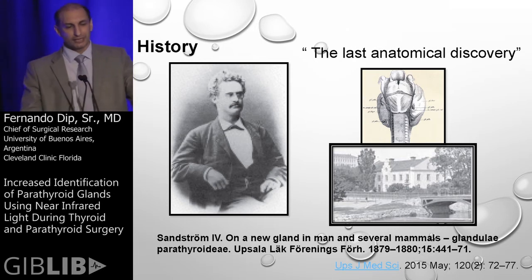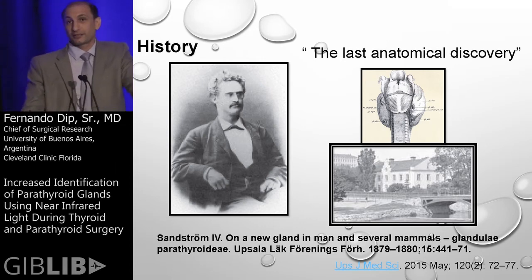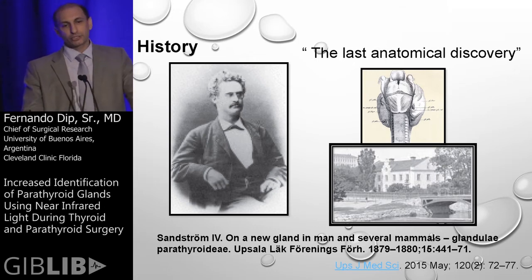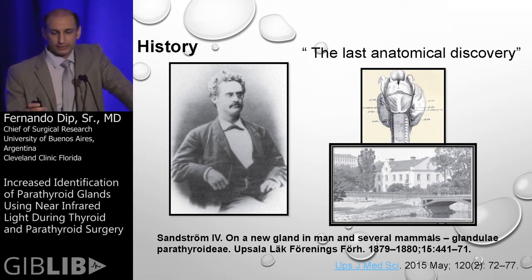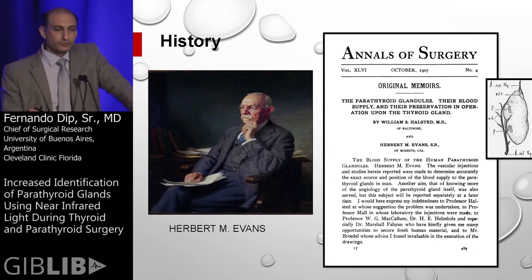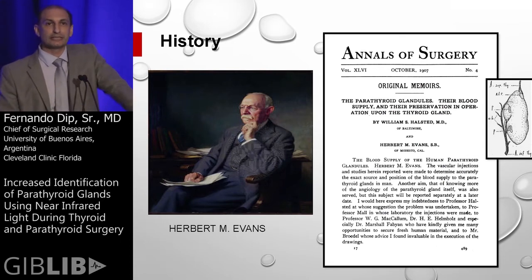If we look back at the history and make a review about the parathyroid glands, we need to name Sandstrom. Sandstrom was a medical student who studied for three years the parathyroid glands. He dissected cats, then dogs, then rabbits, and then humans, and he described four glands that were located on both sides of the neck. They were very tiny, colored glands.